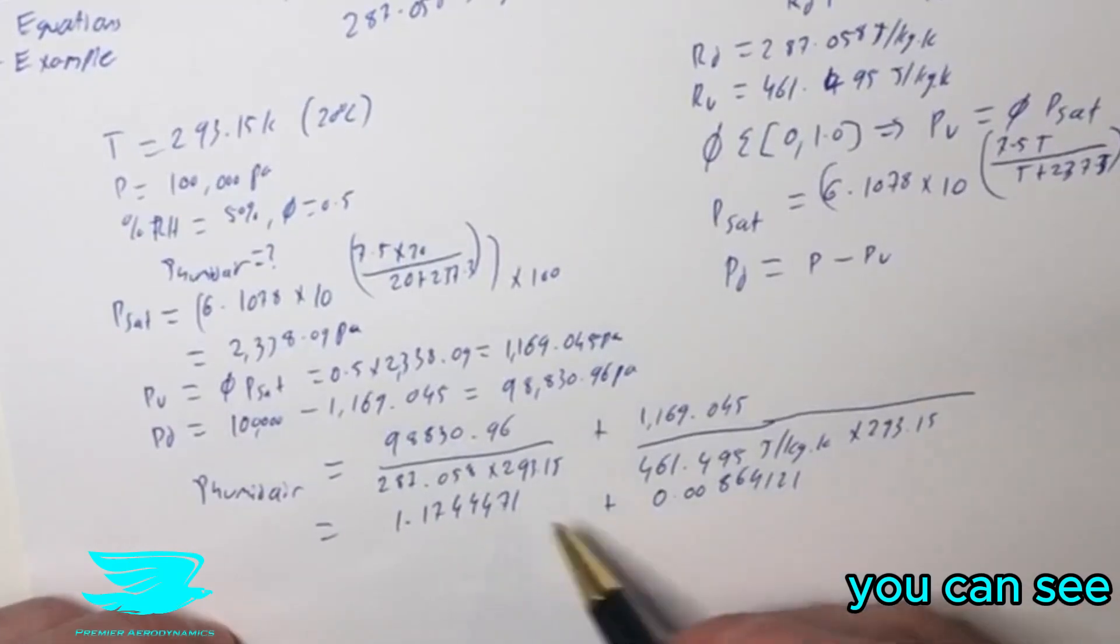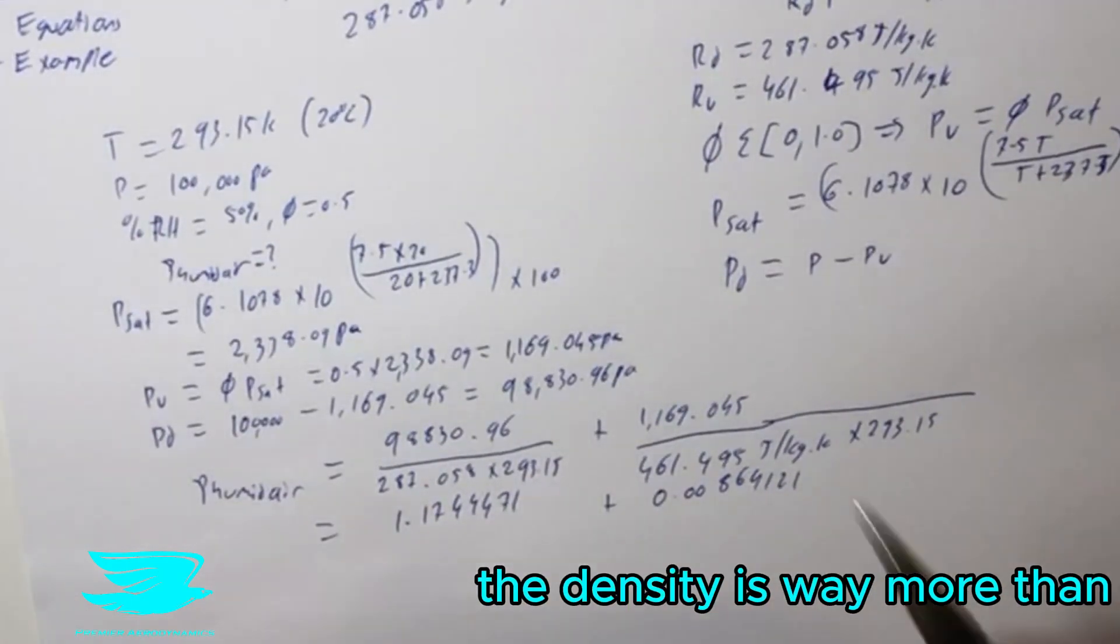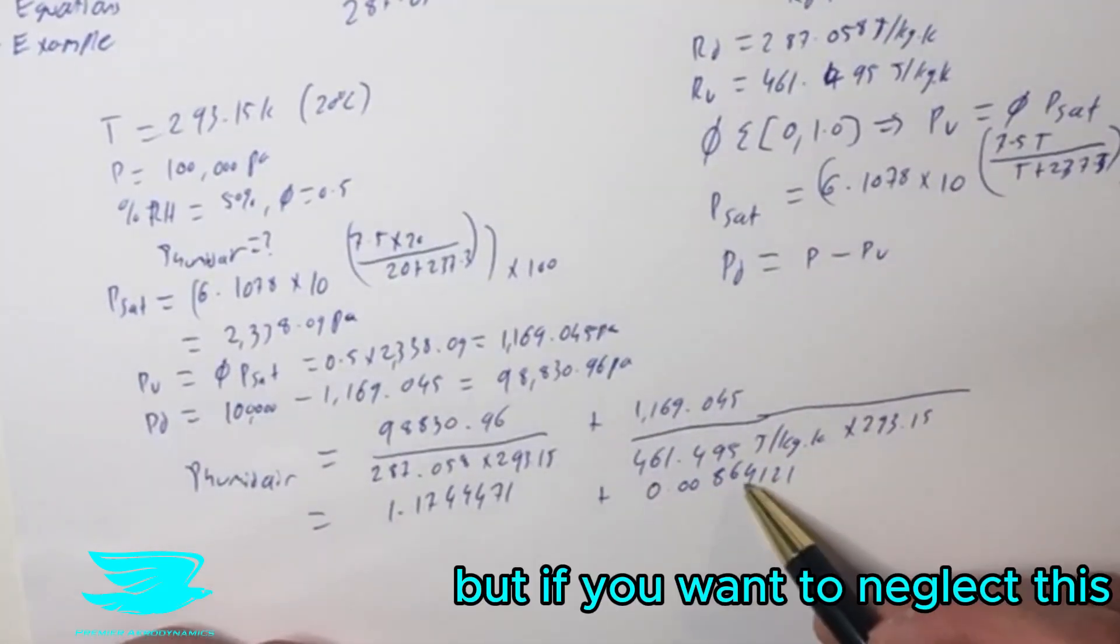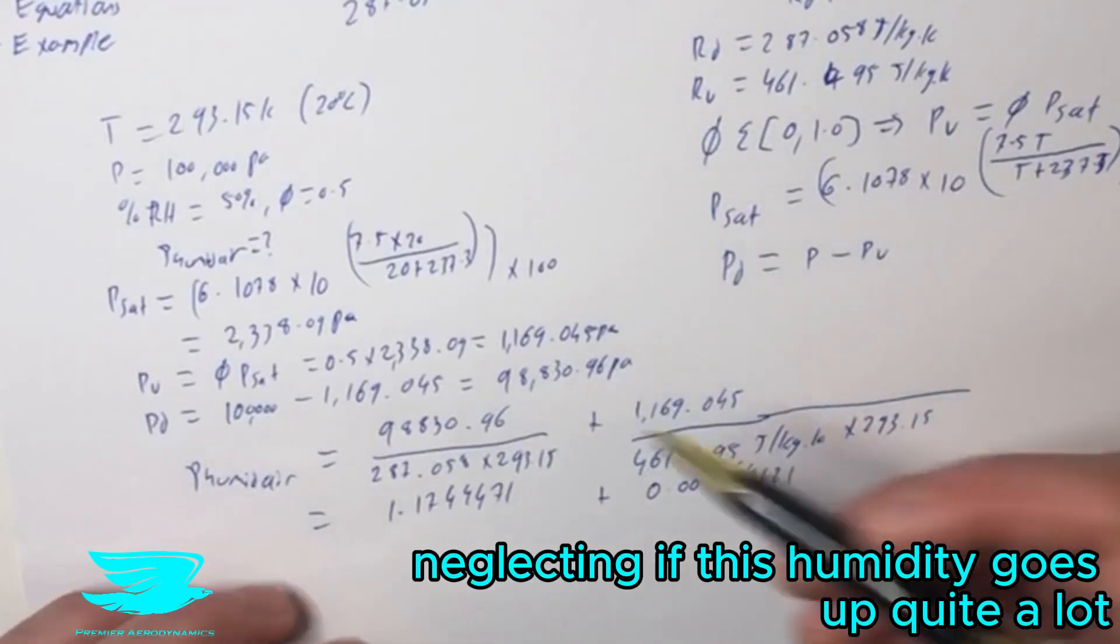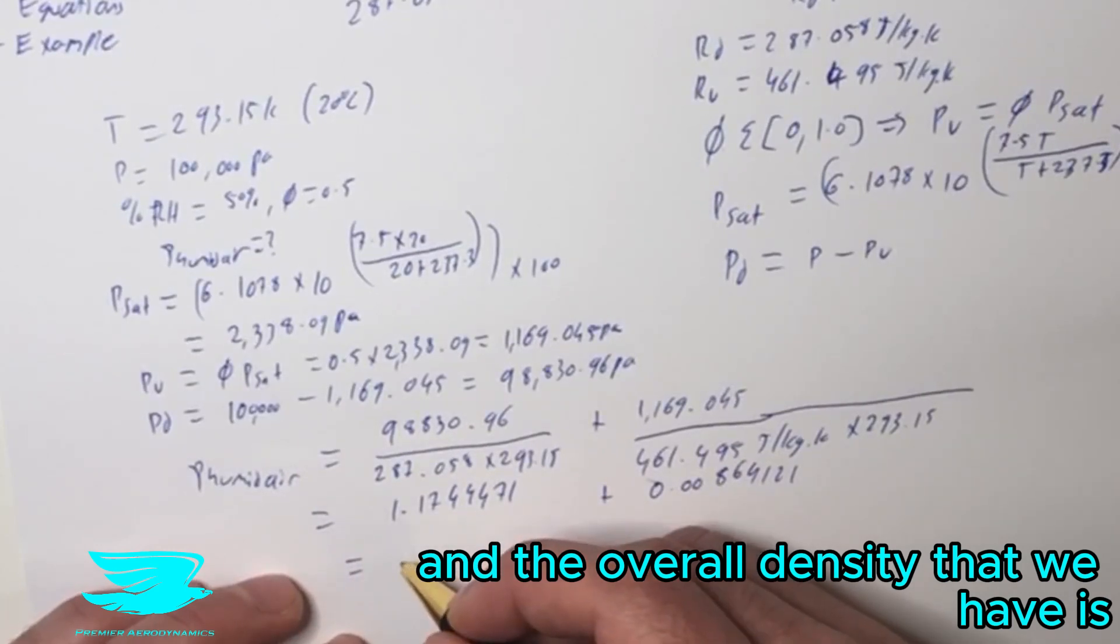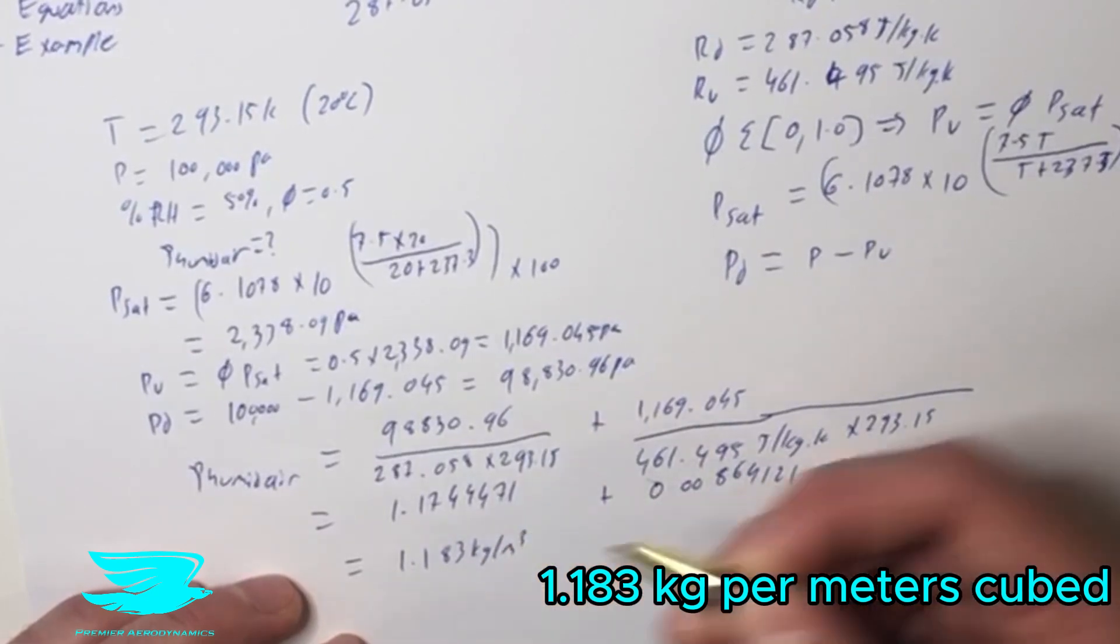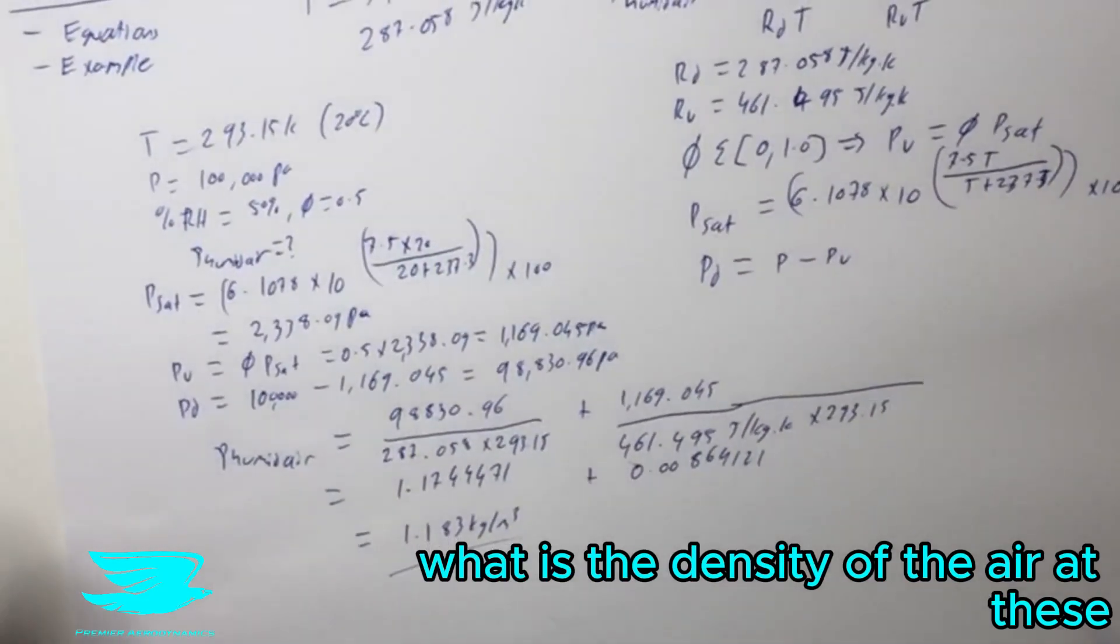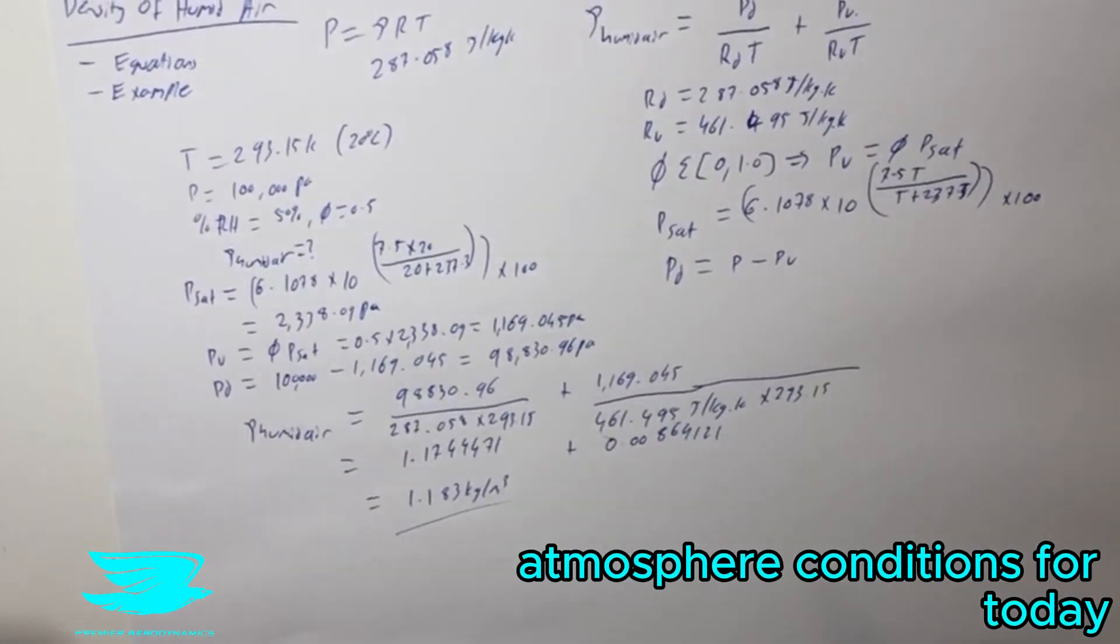These are both in kilograms per meter cube, so you can see the density coming from the dry air is way more than the water vapor. But if you were to neglect this, you can see there's still like a percent or two that you could be neglecting if this humidity goes up quite a lot. The overall density that we have is 1.183 kilograms per meter cube. That is the answer, what is the density of the air at these atmospheric conditions for today.